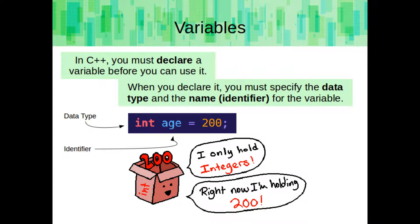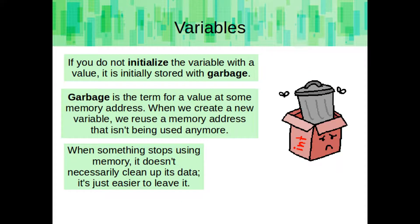In C++, you must declare a variable before you can use it. When you declare it, you must specify the data type and the name for that variable. If you don't initialize the variable with a value, it is initially stored with garbage. Garbage is the term for a value at some memory address. When we create a new variable, we reuse memory addresses that aren't being used anymore. When something stops using memory, it doesn't necessarily clean up its data — it's just easier to leave it.